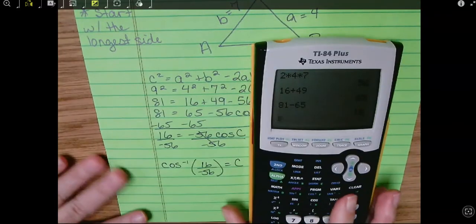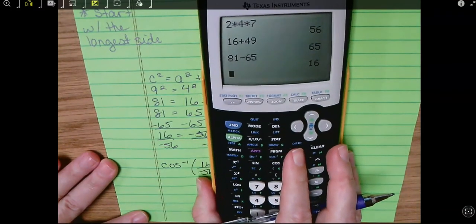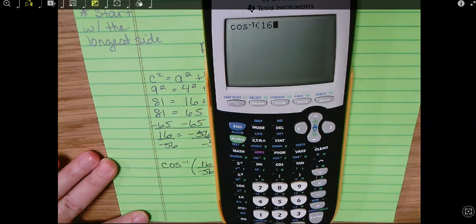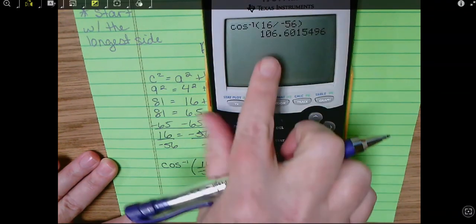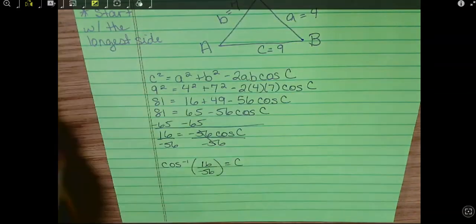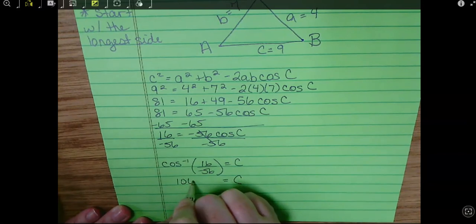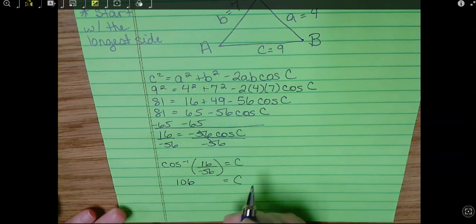Okay, so now we're going to touch the calculator. Inverse cosine of 16 divided by negative 56. And I get 106.6.